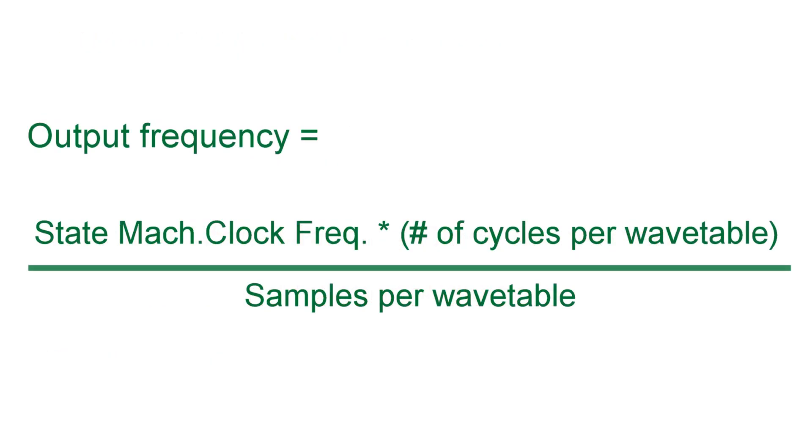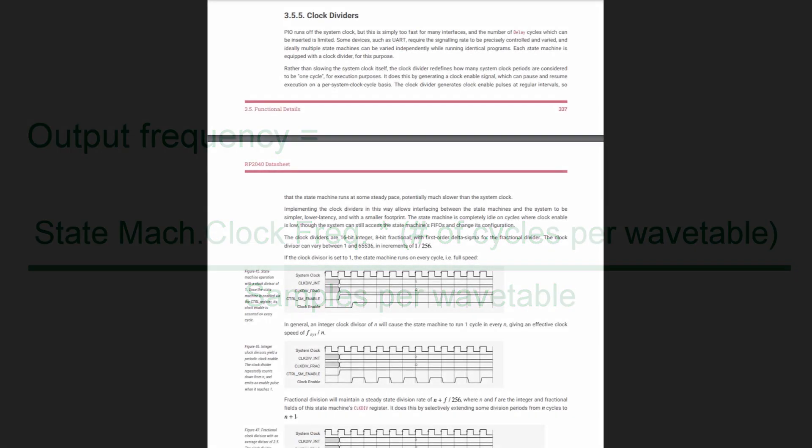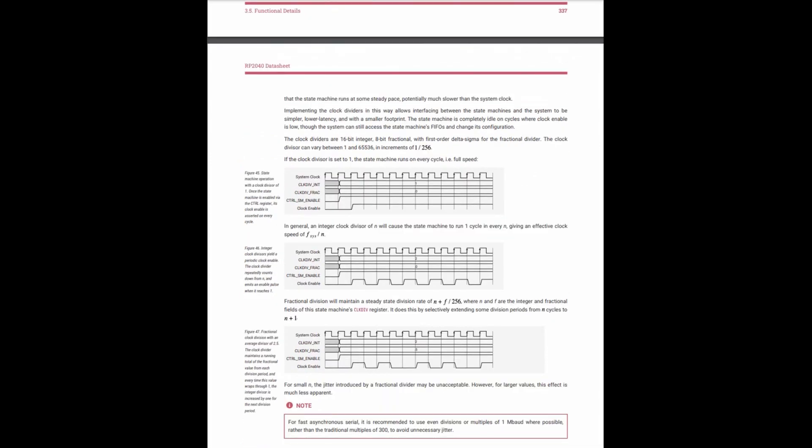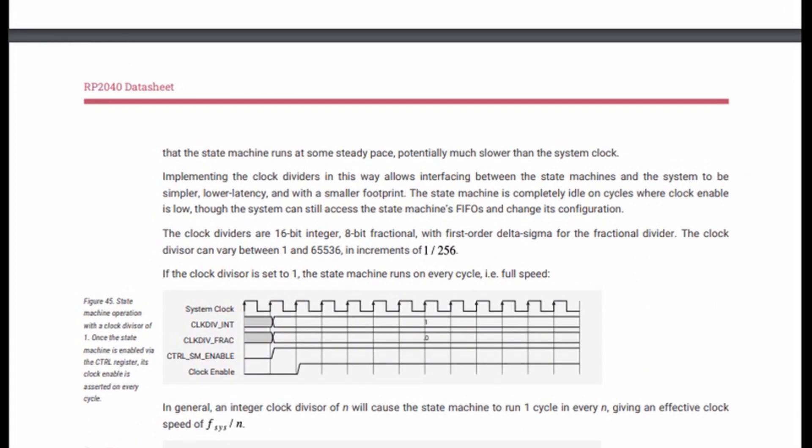The frequency of the generated wave is calculated by multiplying the state machine clock frequency times the number of cycles per wavetable divided by the number of samples per wavetable.